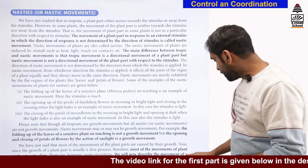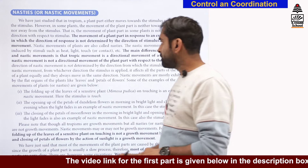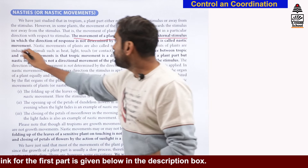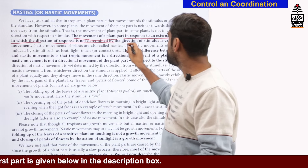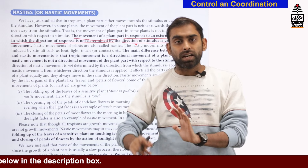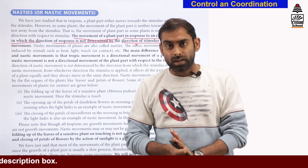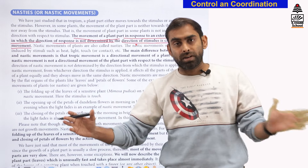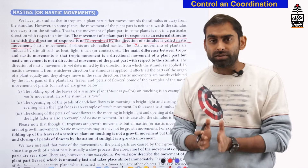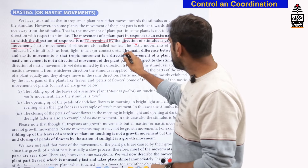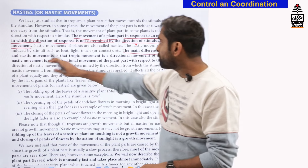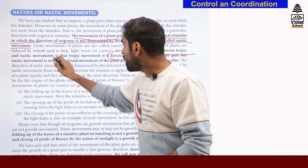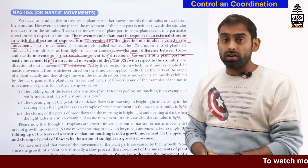The definition of nastic movement is: the movement of a plant part in response to an external stimulus in which the direction of response is not determined by the direction of stimulus. The main difference between tropic and nastic movement is that tropic movement is always directional, whereas nastic movements are non-directional movements.